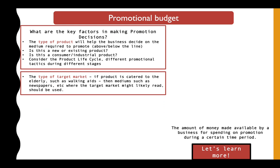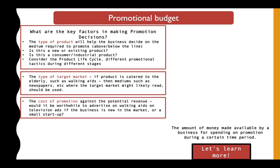We also need to consider the target market — who are we trying to reach? For example, if the product is a walking aid, the target market would be elderly people who need it. We also have to look at cost — how much do you need to spend to promote? If you're using above-the-line methods like TV ads or billboards, the cost will be significantly higher than below-the-line methods like magazine or newspaper ads.